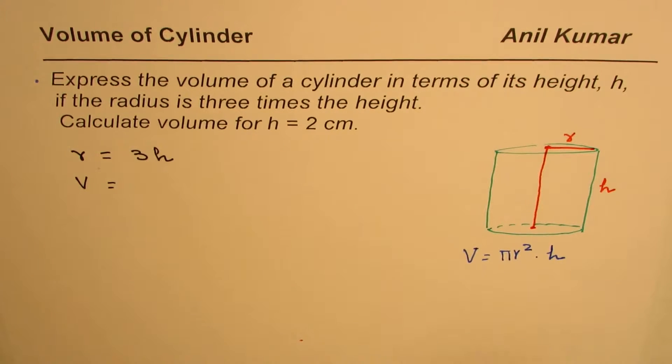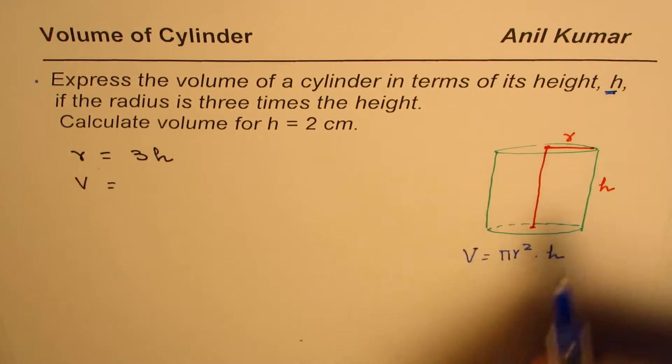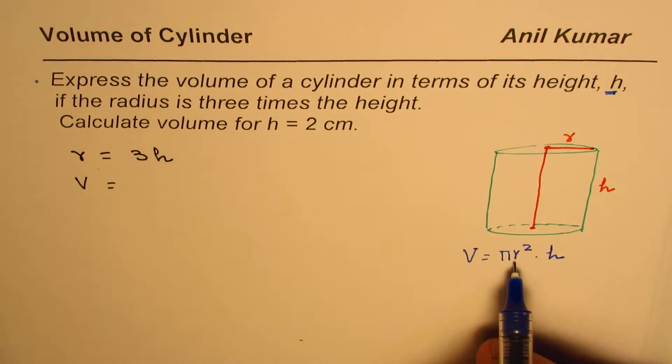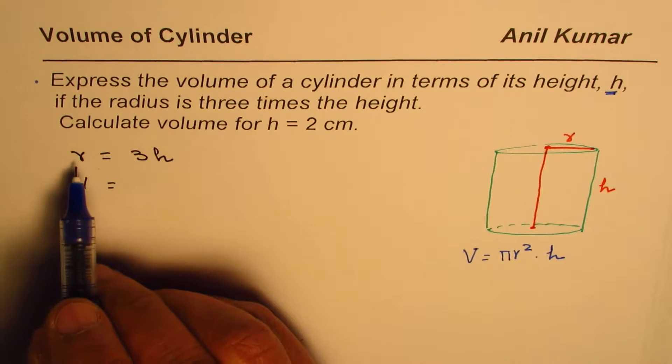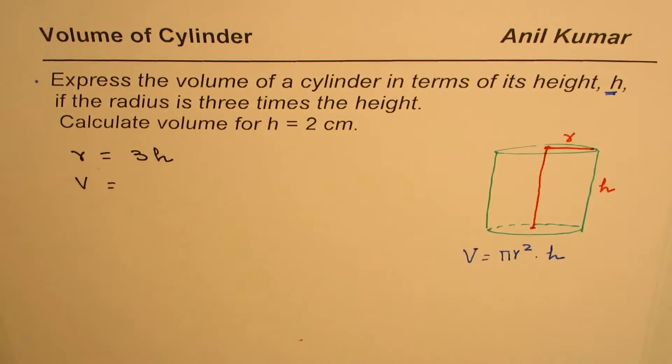Now the question is: express the volume of a cylinder in terms of its height. Here you see, volume has been written in terms of both radius and height. We have to write this volume in terms of height only. And we are given that radius is three times height, so that helps to write the formula in terms of height alone.